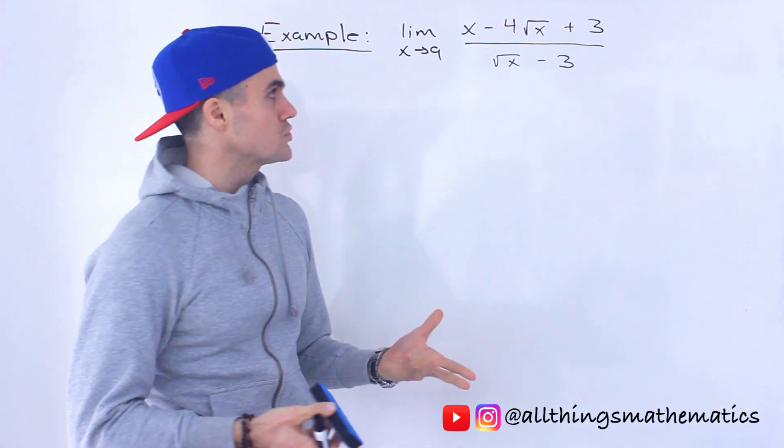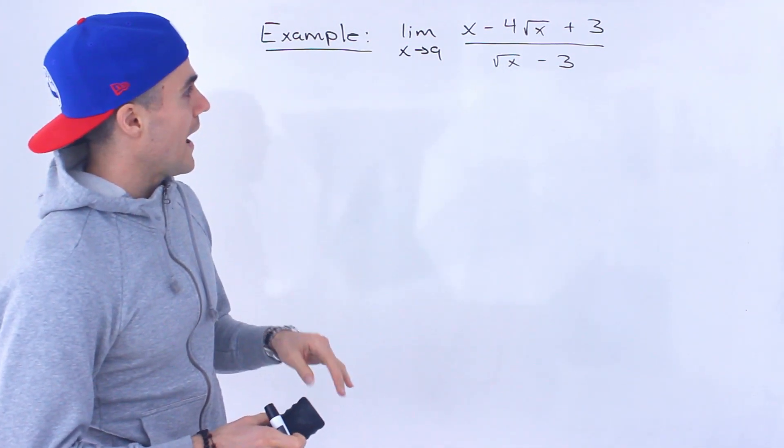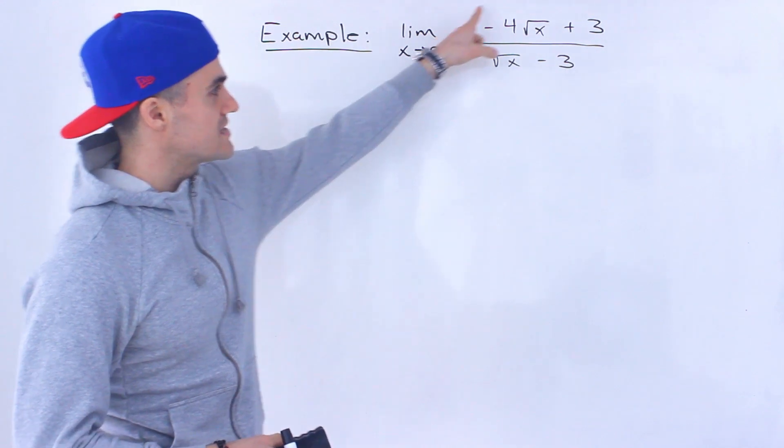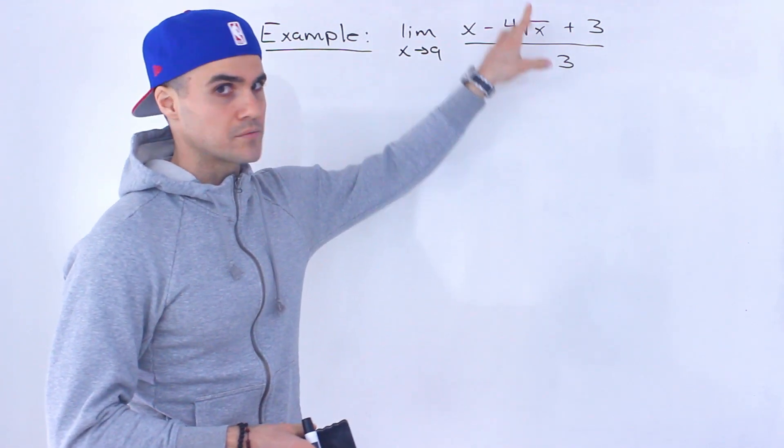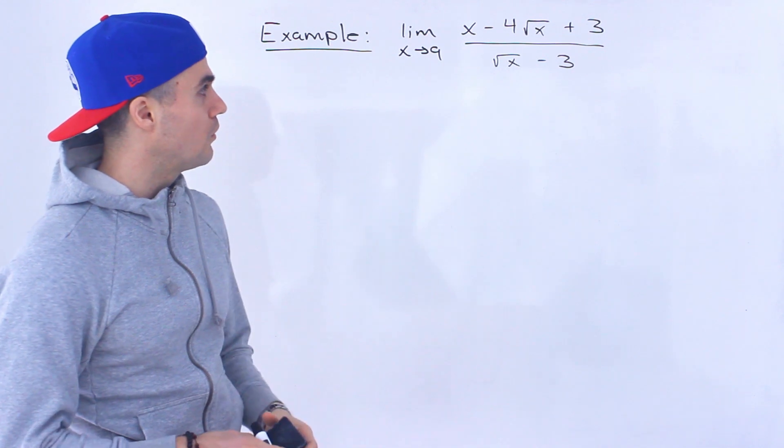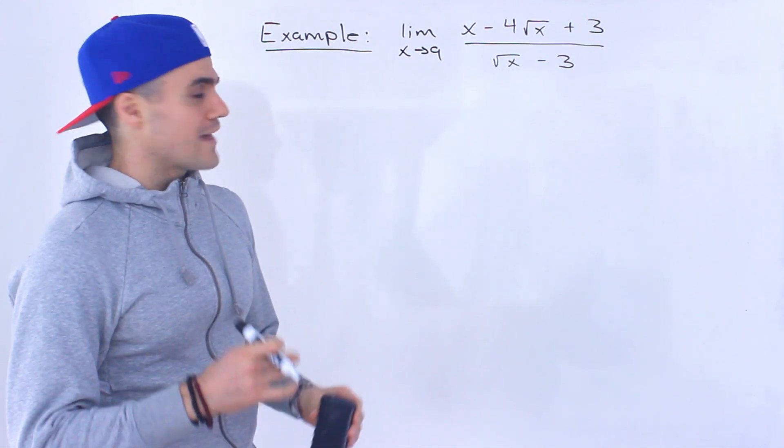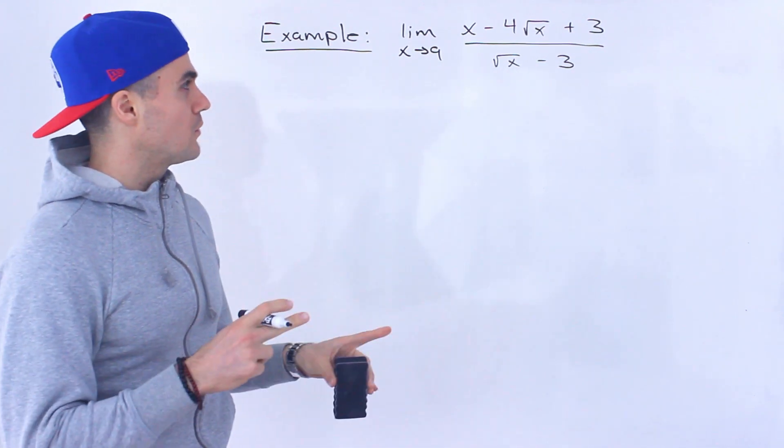Notice if we do a direct substitution, what is going to happen is we're going to end up with 0 at the top, 0 at the bottom. It's going to be 0 over 0. So we're going to have to go about this with a different strategy. And there's actually two different ways to do it.